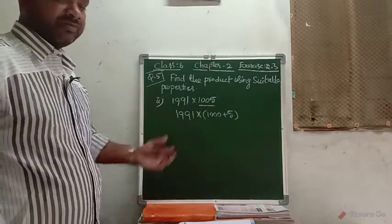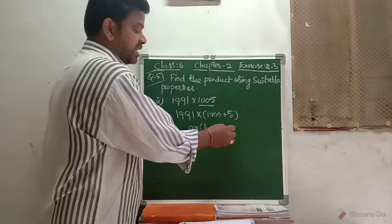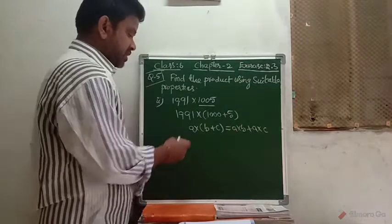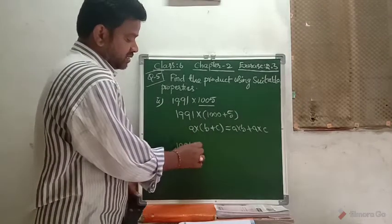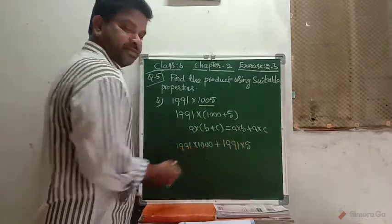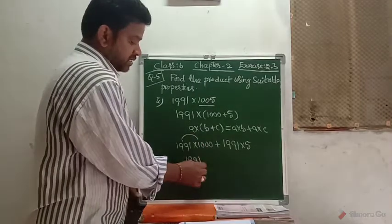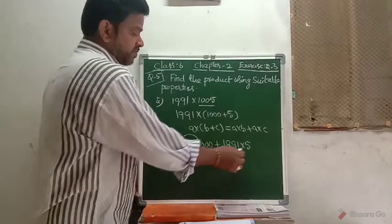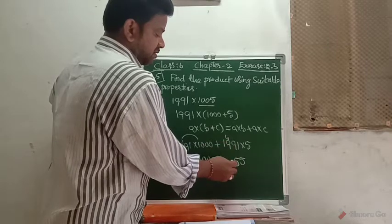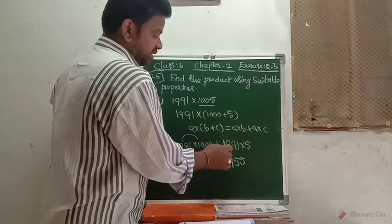So we write it as A into B plus A into C, which is 1991 into 1000 plus 1991 into 5. You just multiply 1991 by 1 and write 3 zeros after the product. Then multiply 1991 by 5: 5 times 1 is 5; 5 times 9 is 45; 5 times 9 is 45 plus 4 is 49; 5 times 1 is 5 plus 4 is 9.